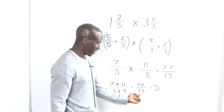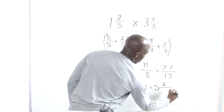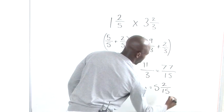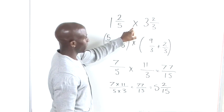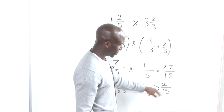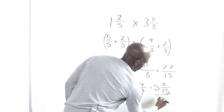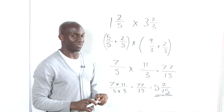So when we multiply 1 and 2 fifths by 3 and 2 thirds, we arrive at the answer of 5 and 2 fifteenths. And that's pretty much how to multiply mixed fractions. That's it for me!